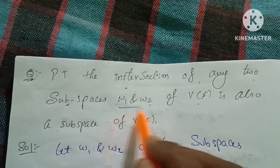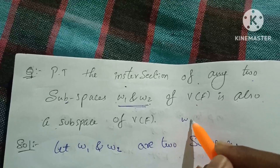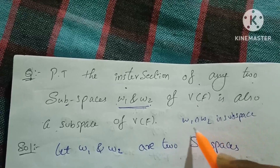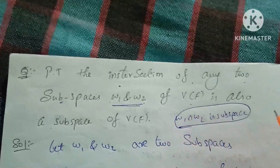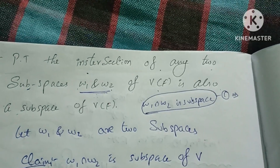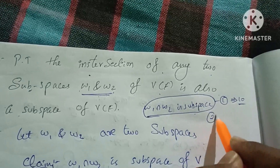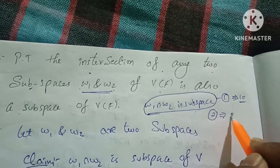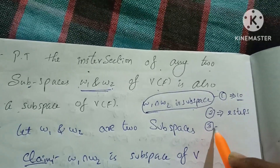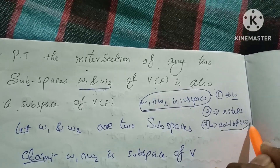If you have two subspaces, this intersection will be a subspace. We will use the subspace conditions. We will then prove that a·alpha plus b·beta belongs to W. This condition confirms it is a subspace.